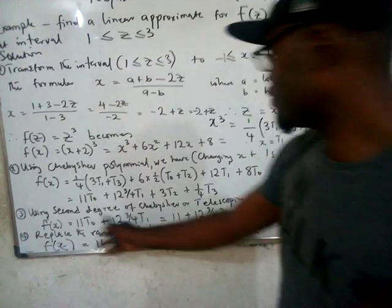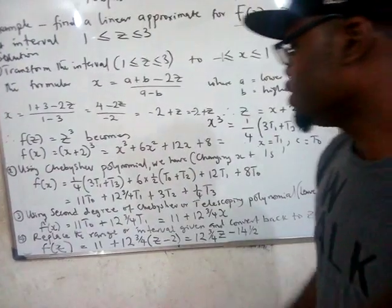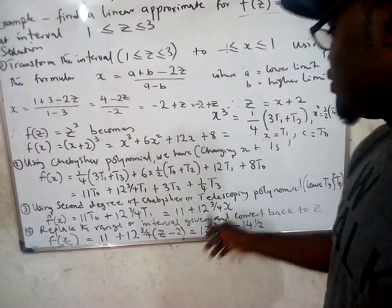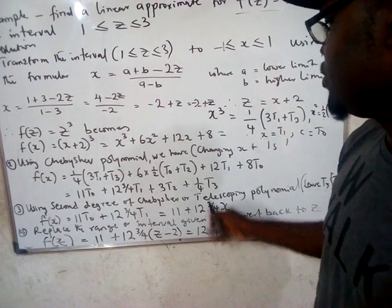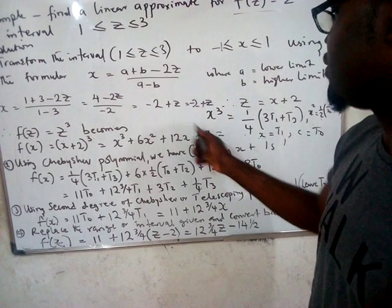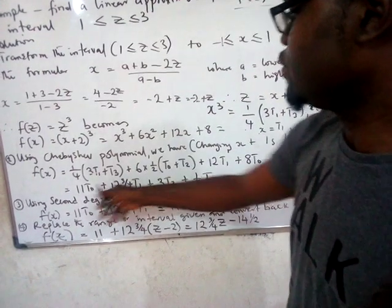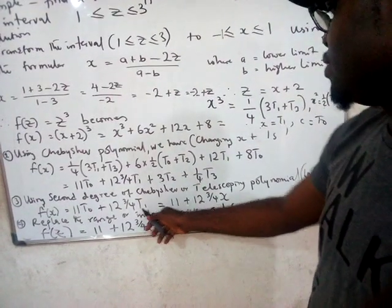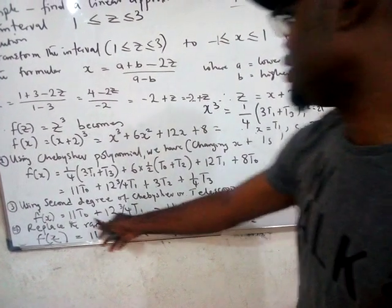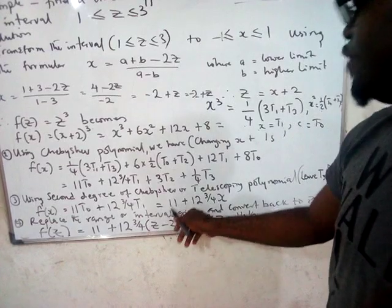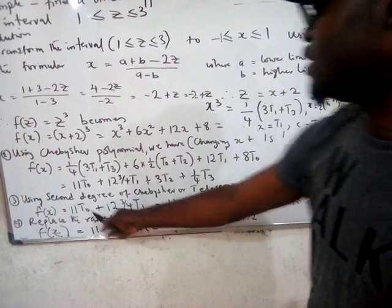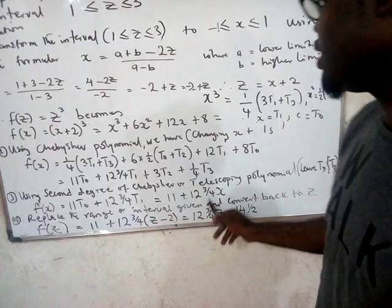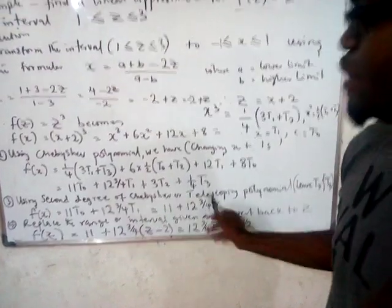After having this expression in Chebyshev variables, convert it back to normal x. You know that T₀ is just a constant, so you leave 11 as it is, whereas T₁ is x, so you replace T₁ with x. This gives your expression back in x variables.